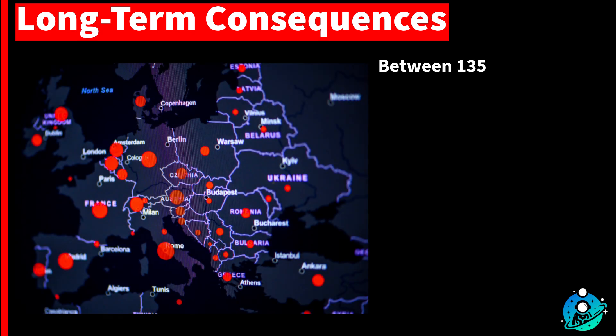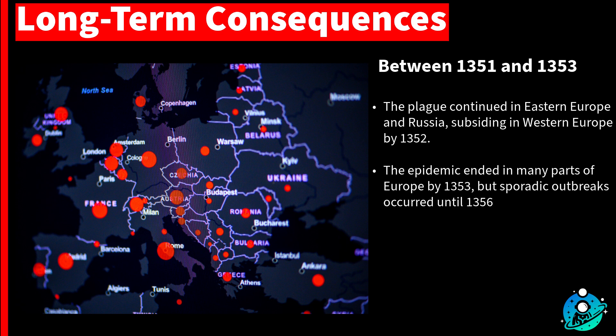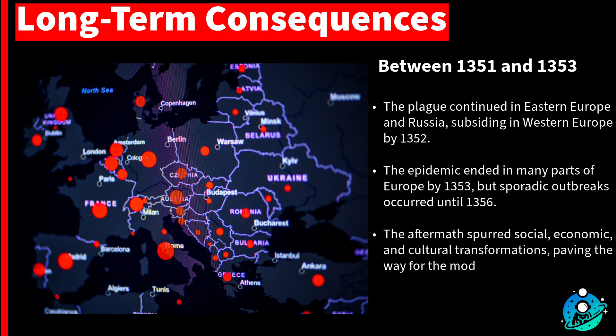Between 1351 and 1353, the plague continued to affect Eastern Europe and parts of Russia, while subsiding in most of Western Europe by 1352. Though the epidemic phase ended in many parts of Europe by 1353, sporadic outbreaks persisted in isolated regions until 1356. Despite the continued presence of the plague, the epidemic's aftermath spurred significant social, economic, and cultural transformations that paved the way for the modern era.